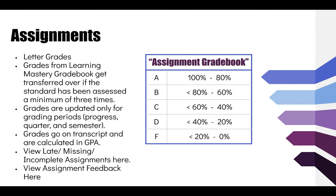The assignment gradebook is the second part of the gradebooks you will see, and this is where you will find your letter grades. Those letter grades are transferred from the Learning Mastery gradebook once a standard has been assessed a minimum of three times. Grades are updated only for grading periods — progress report, quarters, and semester — and these grades will go on your transcript and be calculated in the GPA.